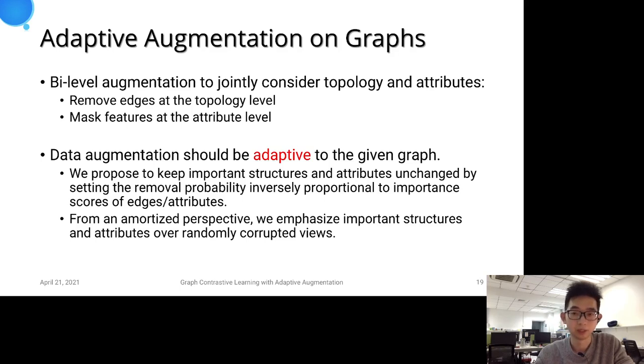But more specifically, we propose to keep important structures and attributes unchanged and perturb possibly unimportant links and features by setting the removal probability inversely proportional to importance scores of edges or attributes. From an amortized perspective, we emphasize important structures and attributes over randomly corrupted views.